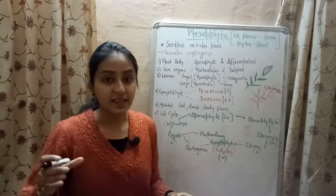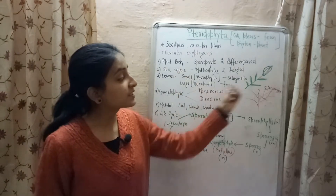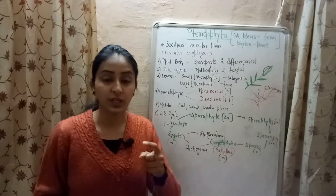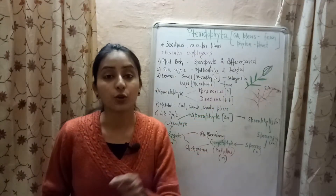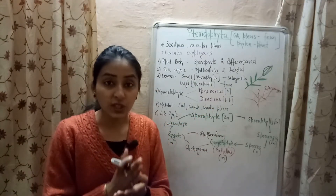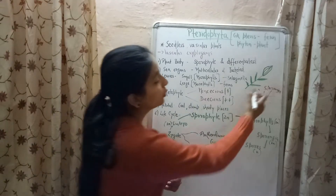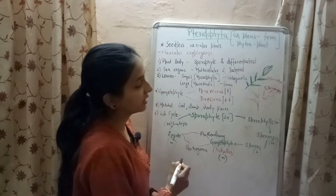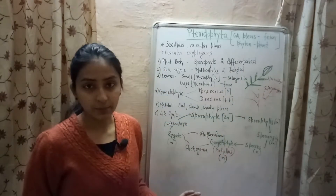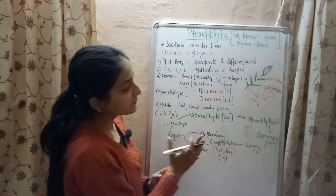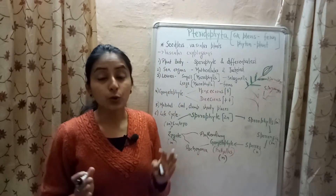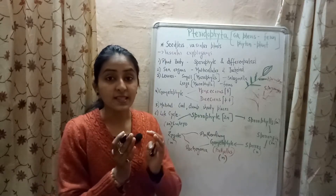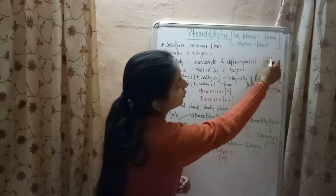The leaves of some pteridophytes contain sporangia. The leaves or leaflets that contain spores are called sporophylls. In some cases, these sporophylls combine together to form a cone-like structure, and this cone-like structure is known as strobili.